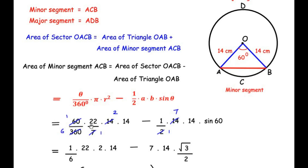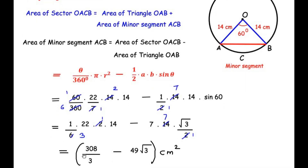After simplification we have: (1/6) × 22 × 2 × 14, minus 7 × 14 × (√3/2). We can further simplify: 2 divides into 6 giving 3 in the denominator, and 2 divides into 14 giving 7. Multiplying 22 × 14 in the numerator gives 308, with denominator 3. On the other side, 7 × 7 = 49, giving 49√3.